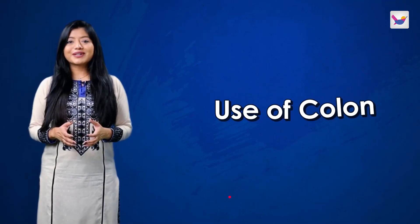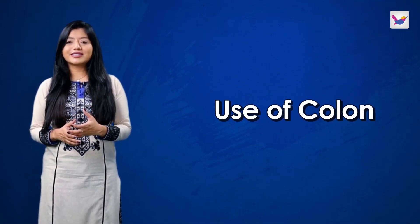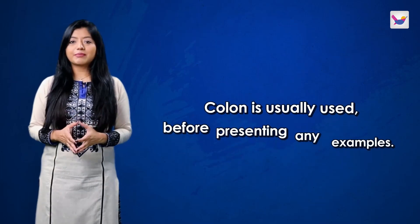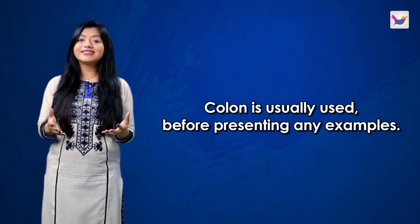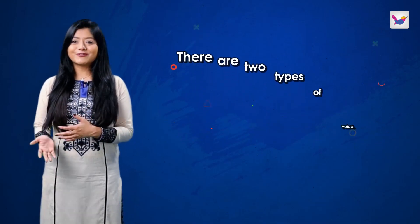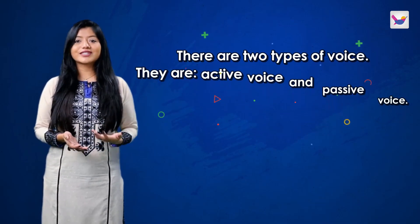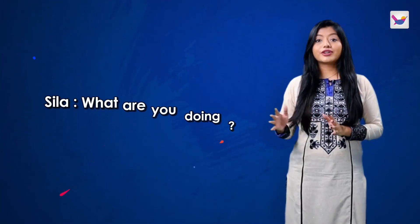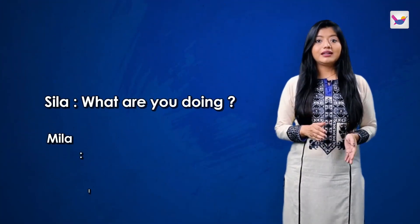After semicolon, we have the use of colon. A colon is used when a longer pause than a semicolon is needed. It is used when an example or explanation is given within a sentence. For example: 'There are two types of voice: they are active voice and passive voice.' In dialogue or drama, a colon is used after the speaker's name. For example — Sila: 'What are you doing?' Mila: 'I am reading.'